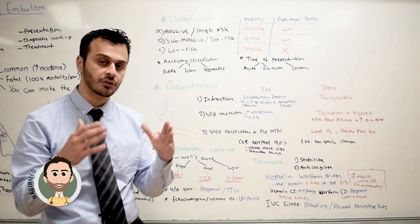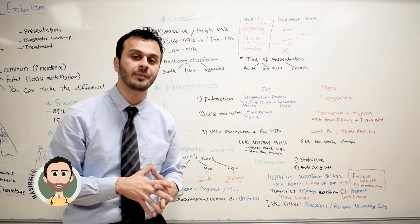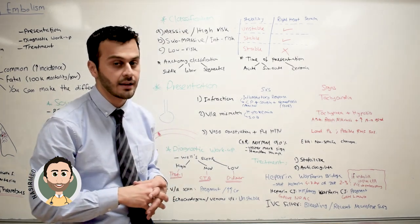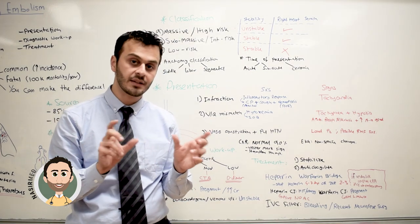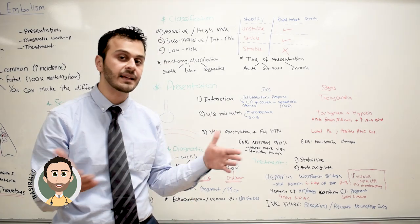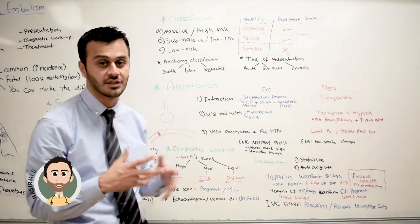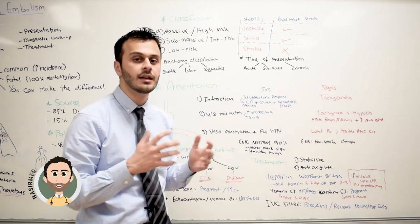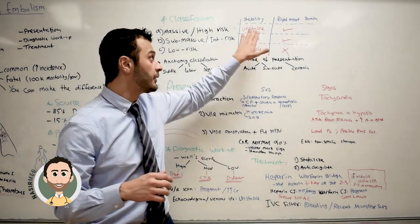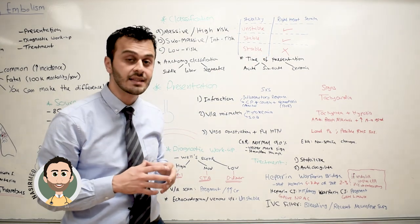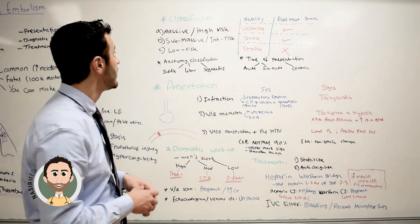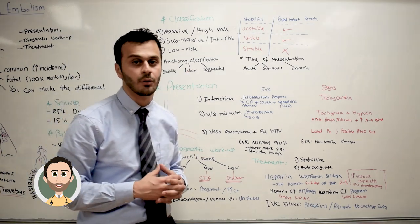Or the patient had a drop of more than 40 mmHg in systolic blood pressure compared to their baseline, lasting more than 15 minutes, and not explained by any other pathology such as sepsis or myocardial infarction. If pulmonary embolism is associated with hemodynamic instability as well as right heart strain, we classify this as massive or high-risk pulmonary embolism.